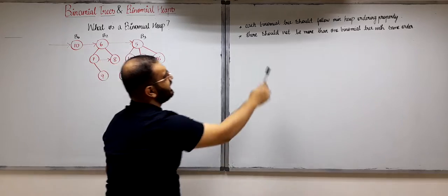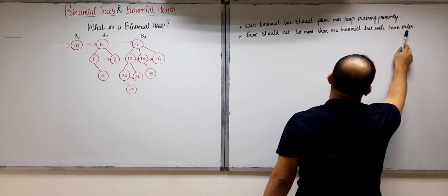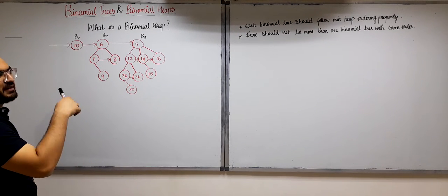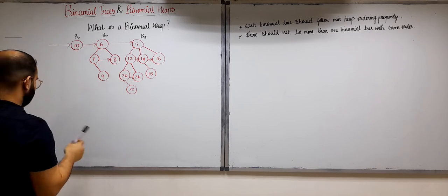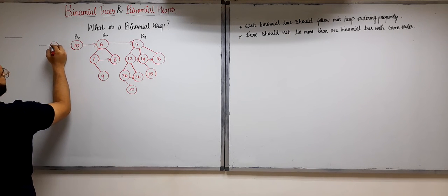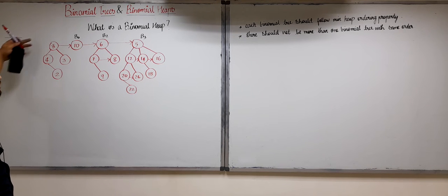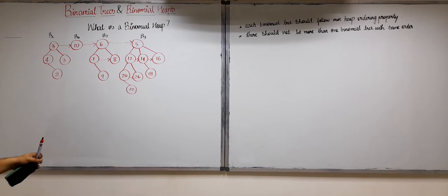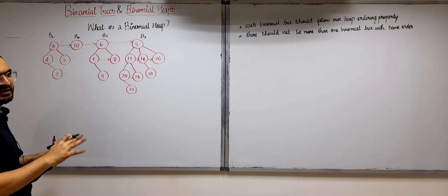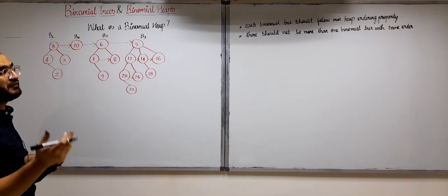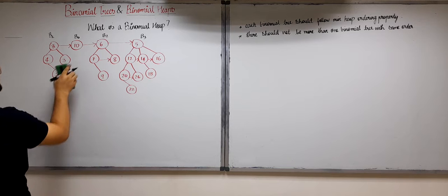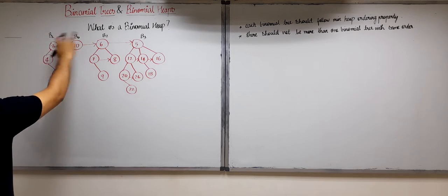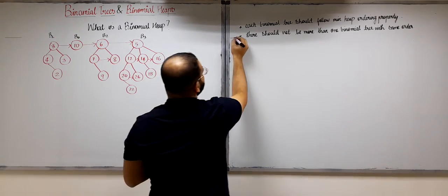The second necessary condition is that there should not be more than one binomial tree with the same order. We have three binomial trees with different orders: 0, 2, and 3. Suppose I draw another binomial tree with order 2 — so this is B2 — this should not happen. We already have a B2, so we cannot have another B2. This entire thing is no longer a binomial heap because we have two binomial trees with the same order, violating this condition.